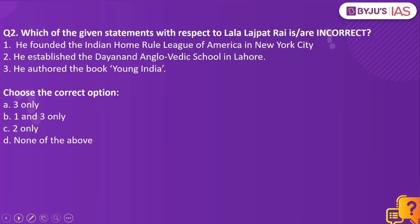Moving on to Question No. 2: Which of the given statements with respect to Lala Lajpat Rai is or are incorrect? Statement one: He founded the Indian Home Rule League of America in New York City. Statement two: He established the Dayanand Anglo-Vedic School in Lahore. Statement three: He authored the book Young India. Choose the correct option.